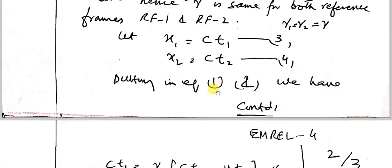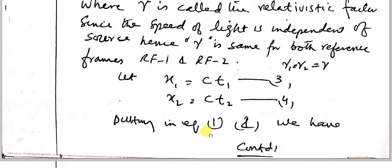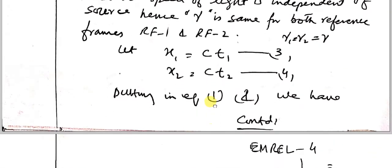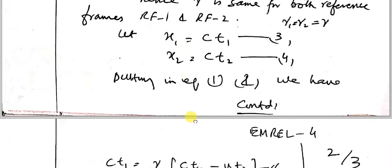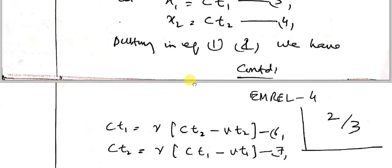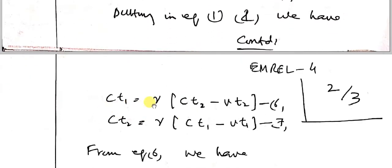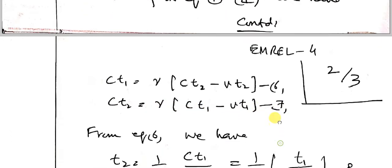Putting these two expressions into equations 1 and 2 respectively, we get: c·t1 = gamma times (c·t2 plus v·t2), and c·t2 = gamma times (c·t1 minus v·t1). These are equations 6 and 7.